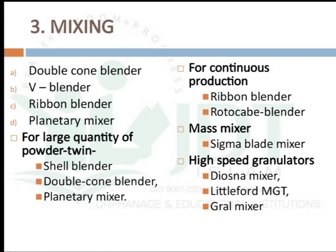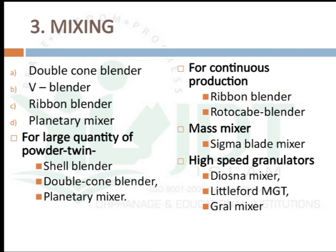We can use double cone blenders, V blenders, ribbon blenders, and planetary mixers. For large quantities of powder we use shell blenders, double cone blenders, and planetary mixers. For continuous production of granules we use ribbon blenders and rota cable blenders. For production of mass mixers we use sigma blend mixers.